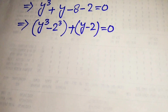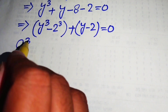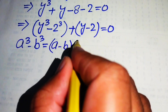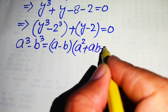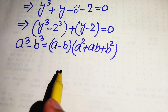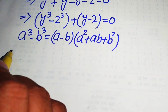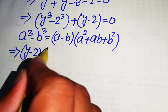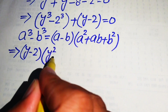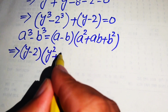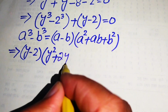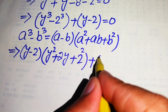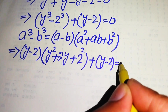We use the difference of cubes formula: a cubed minus b cubed equals a minus b times a squared plus ab plus b squared. Applying this to the first factor, we write y minus 2 times y squared plus, with a equal to y and b equal to 2, we get 2y plus b squared which is 4, and then plus y minus 2, all equals 0.